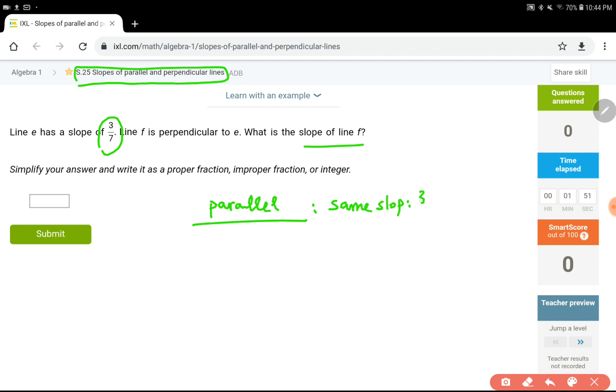Some examples are 3 and 3, 1 fourth and 1 fourth. One more example, negative 2 sevenths and negative 2 sevenths. These are parallel lines, slopes examples.